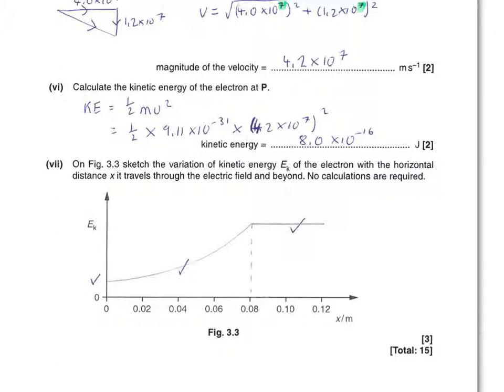Having found the magnitude of the velocity to be 4.2 times 10 to the 7 metres per second, it's straightforward to find the kinetic energy. So, substitution into the equation, kinetic energy equals 1/2 mv squared. So, just bringing this number down and that gives us an answer of 8 times 10 to the minus 16 joules.